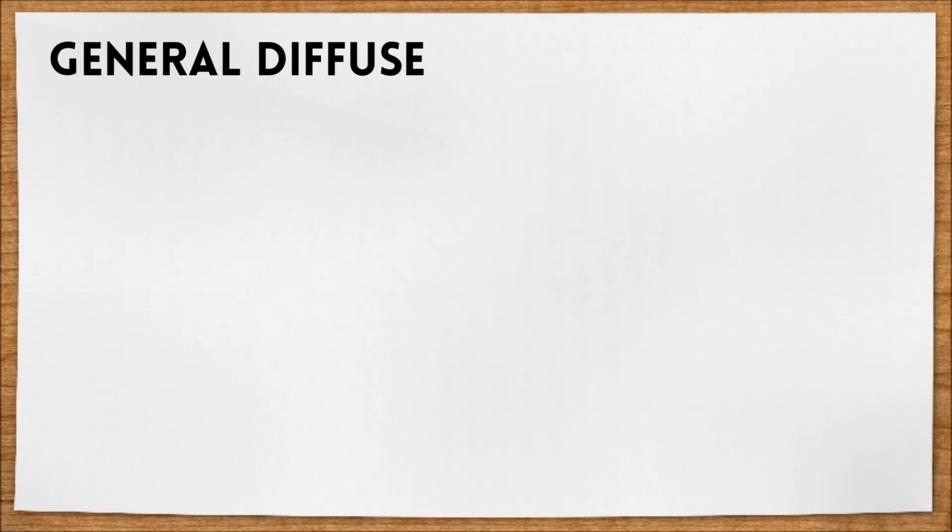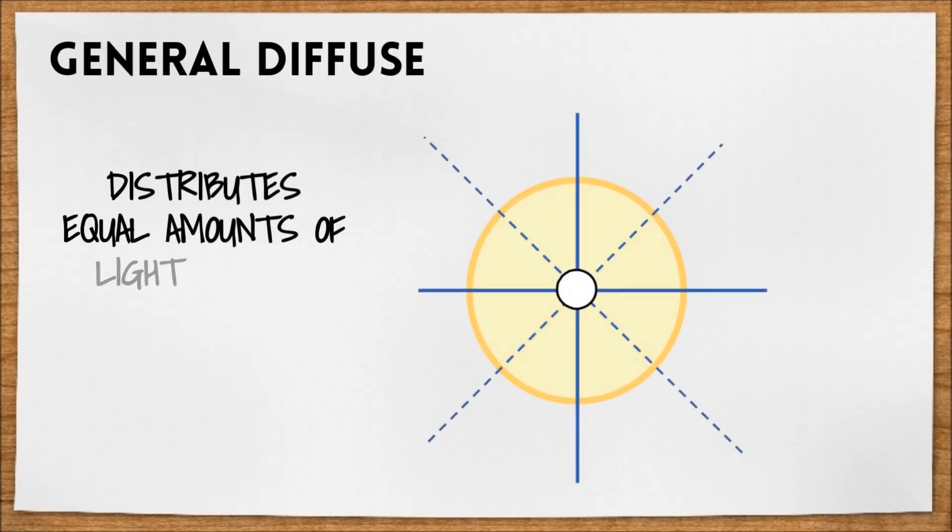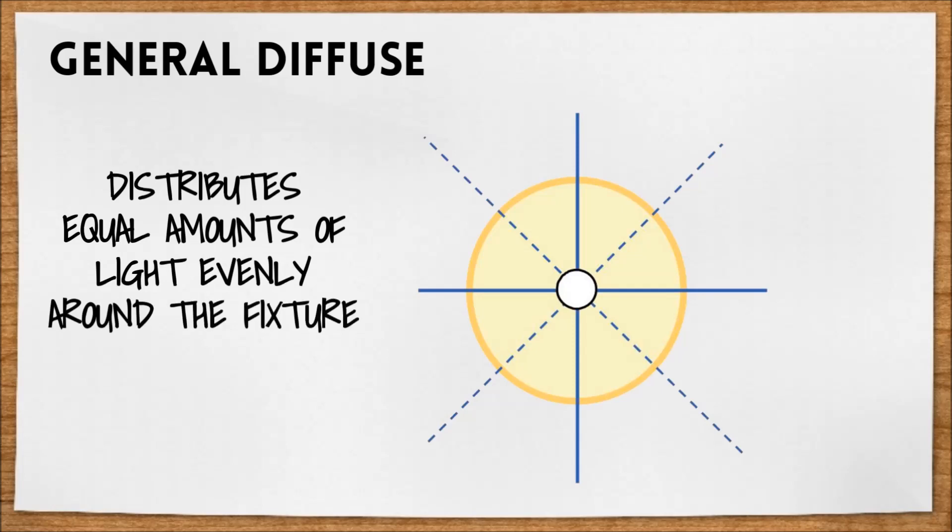And last, we have general diffuse distribution, which distributes equal portions of light evenly around the fixture.